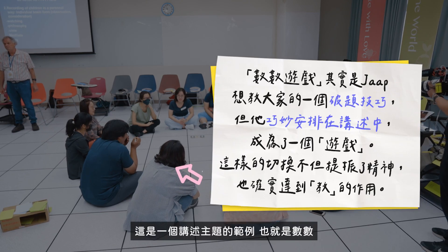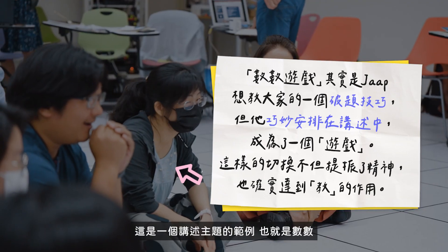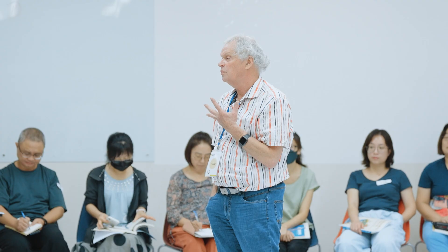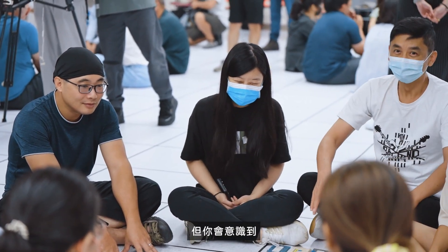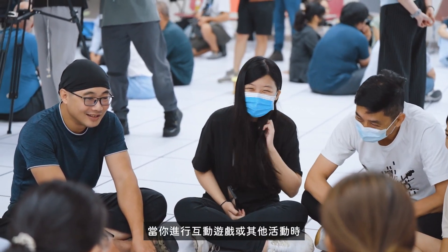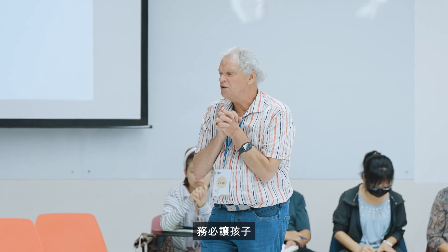This is an example to introduce a subject — in this case, counting. It is not always possible to think about a game, but think about how can I introduce a subject in a way that is interesting for the children. It is not always possible, but you realize when you do an attractive game or other activity, the children are in this moment interested. Then the instruction follows.